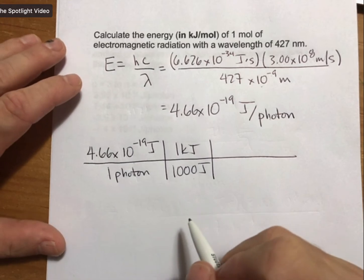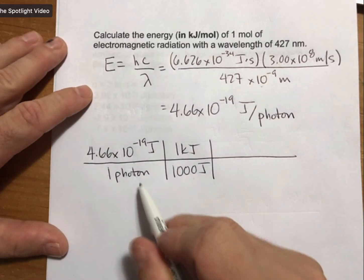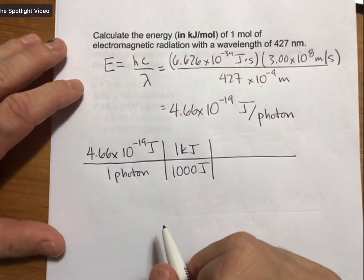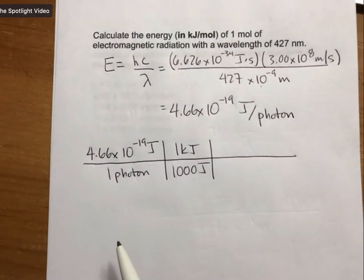Now the next one is a unit conversion that we haven't done before specifically for photons. But as we said before, if you use Avogadro's number for the number of items in a mole, it can be atoms, it can be molecules, it can be ions.